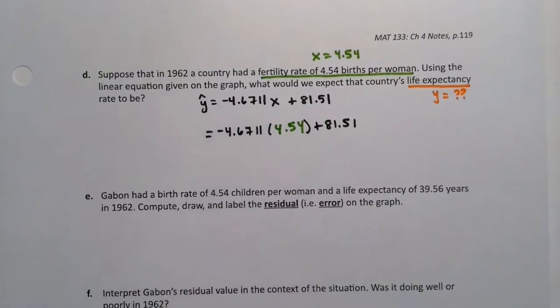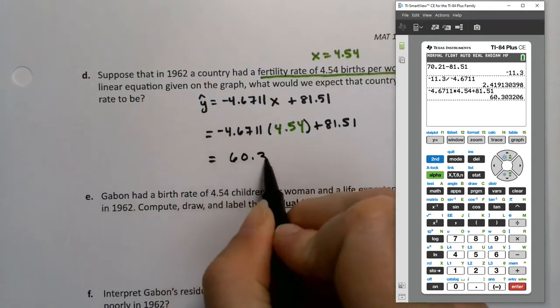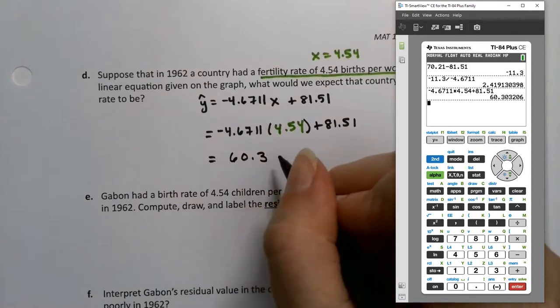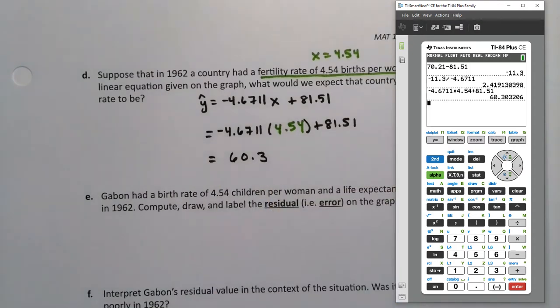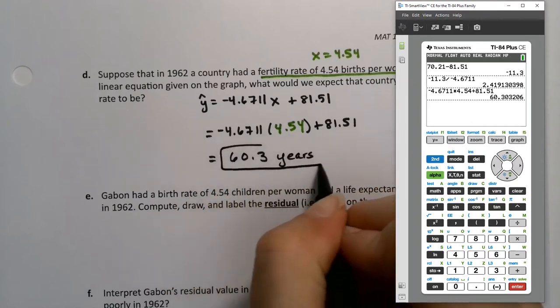And that's pretty straightforward. We can just type that into the calculator. And again, use that negative sign because it's at the front. So negative 4.6711. Now you can either use a times symbol or you can use parentheses. So I'll just use the times symbol. Times 4.54 plus 81.51. And we get 60.3. It's really important that you take advantage of the very powerful calculators that you have. So if you type the whole line like it is, the calculator will do the order of operations correctly for you. Which is lovely. Now keep in mind the unit for this. It has to be years. Because this was life expectancy.